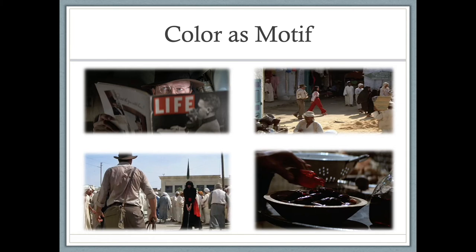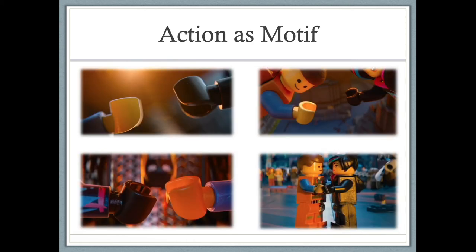We can have a specific color as a repeating motif. In Raiders of the Lost Ark, while the film is in color, the color red serves to highlight certain elements — when we see something in that bright fire-engine red, it draws our attention. In The Lego Movie, we have actions as motifs: the idea of holding hands. Throughout the film, two characters come so close to holding hands, and then by the end they finally do.